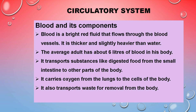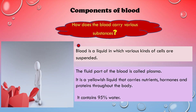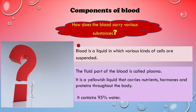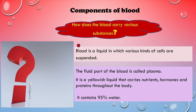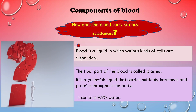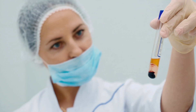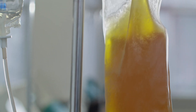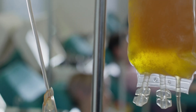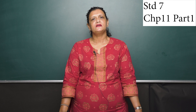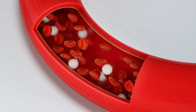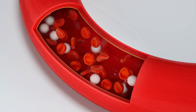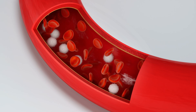Let us now see what blood is actually made up of. What are the components of blood? Blood is made up of two components: one is the liquid component which we call plasma, and the next are the suspended materials which are various cells in the blood. The plasma is 95% water. It is a pale yellow liquid because it carries proteins, hormones and other nutrients for the body. The other suspended materials in the blood are various cells, namely the red blood cells, the white blood cells and the platelets.